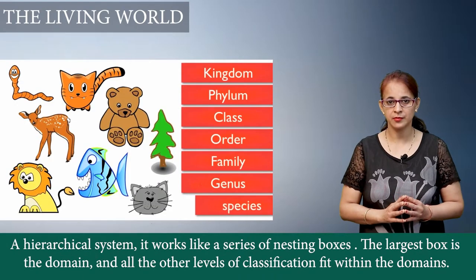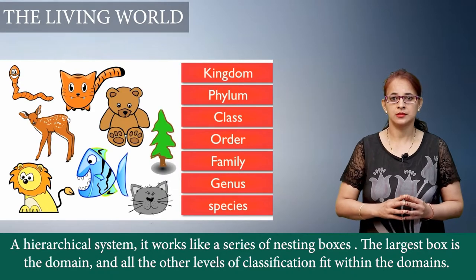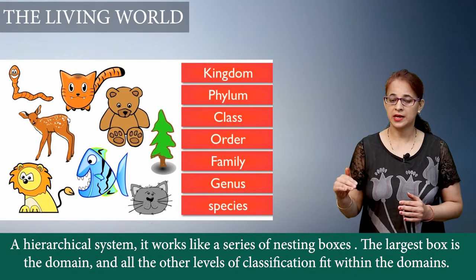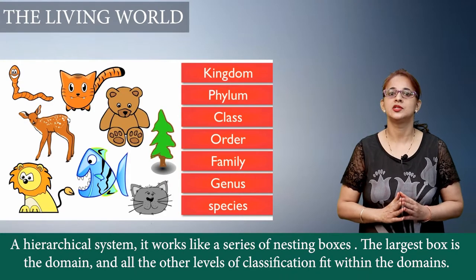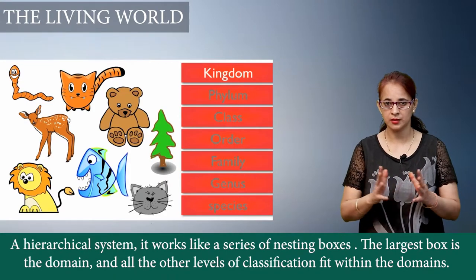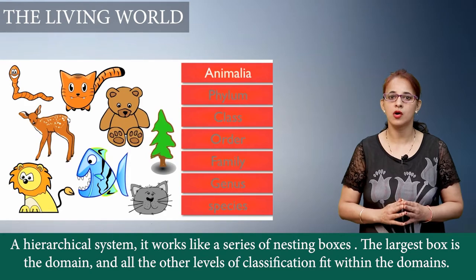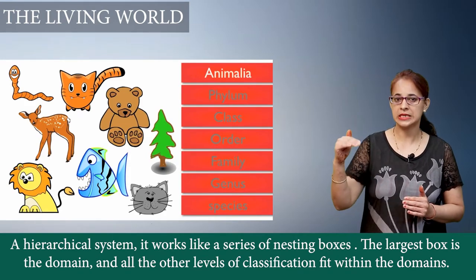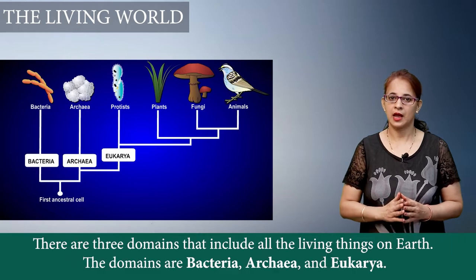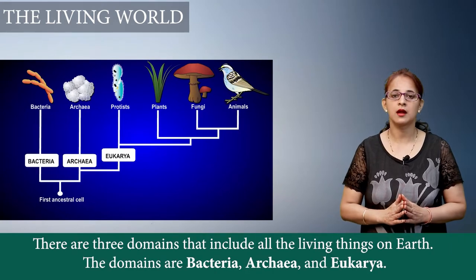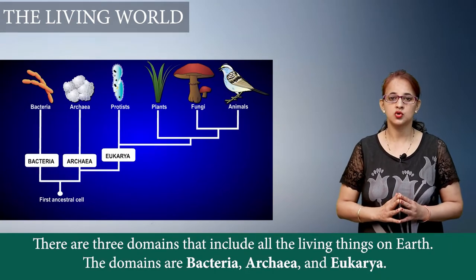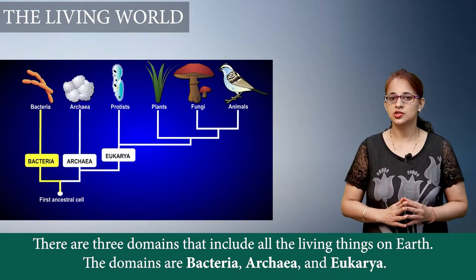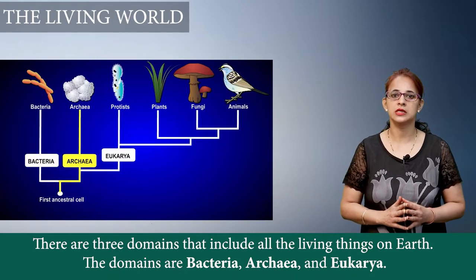This classification system is a hierarchical system like nested boxes. The biggest box is called the domain, and all the rest of the classification systems are beneath these domains. There are three domains into which all living organisms on earth are divided.